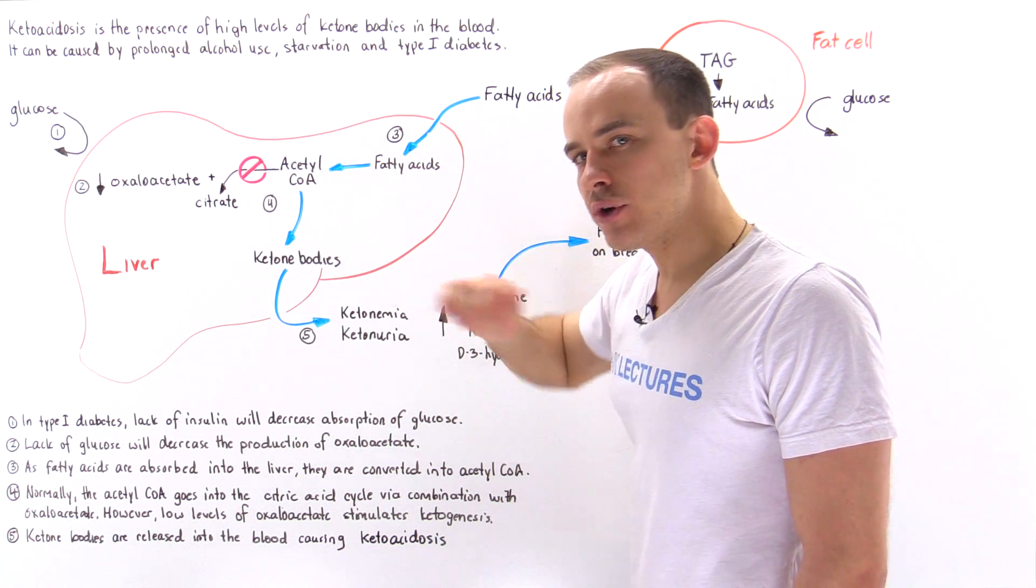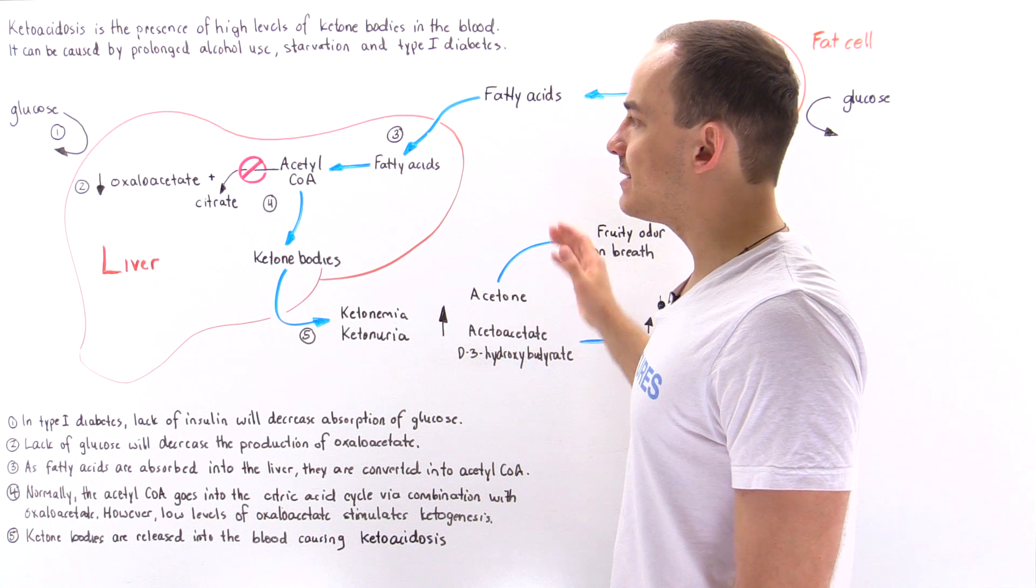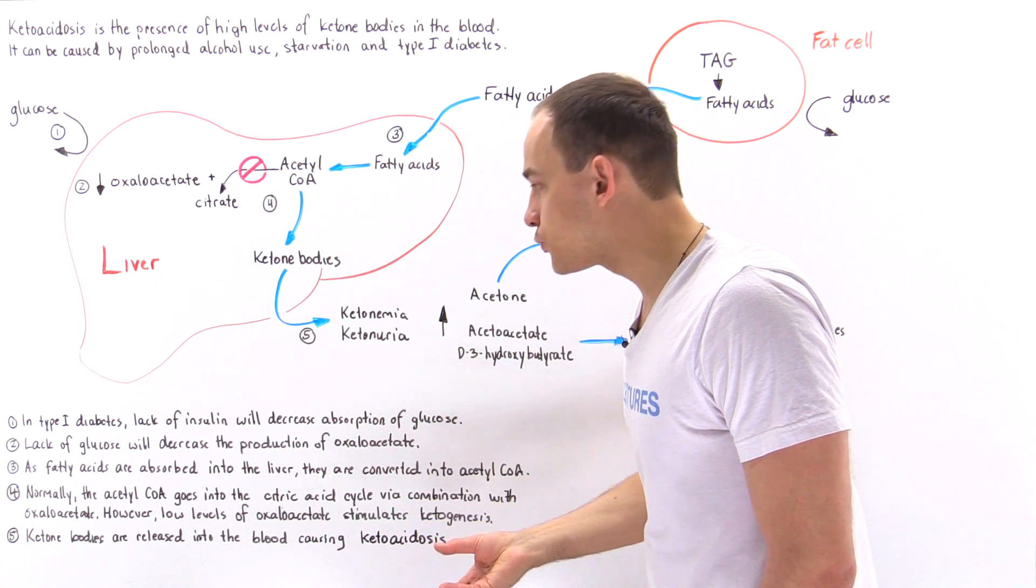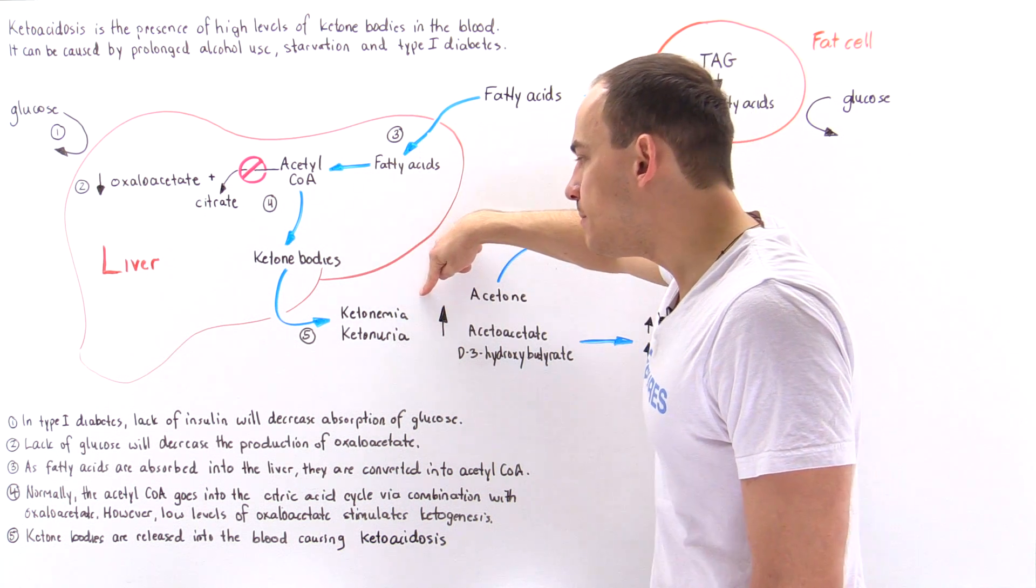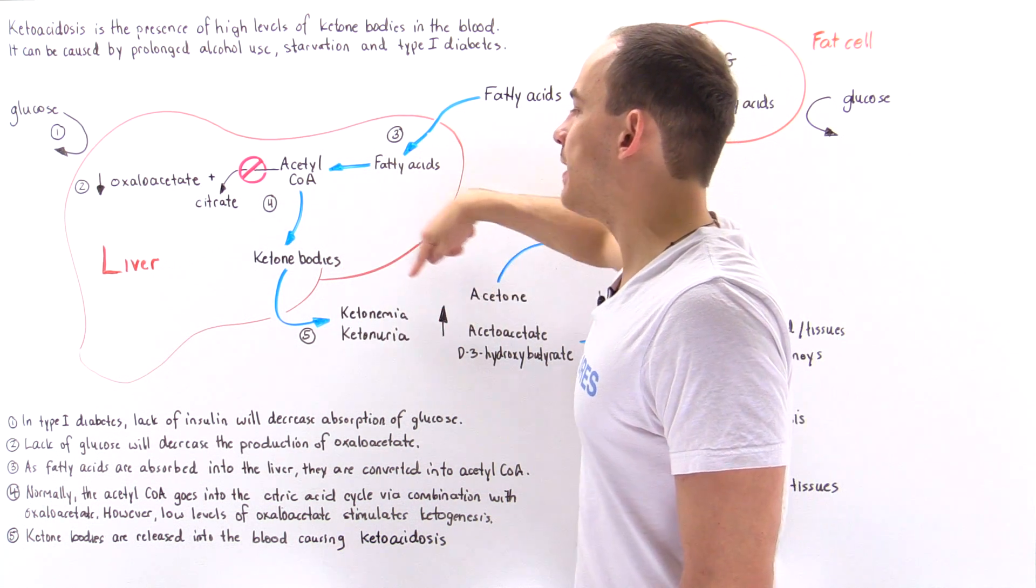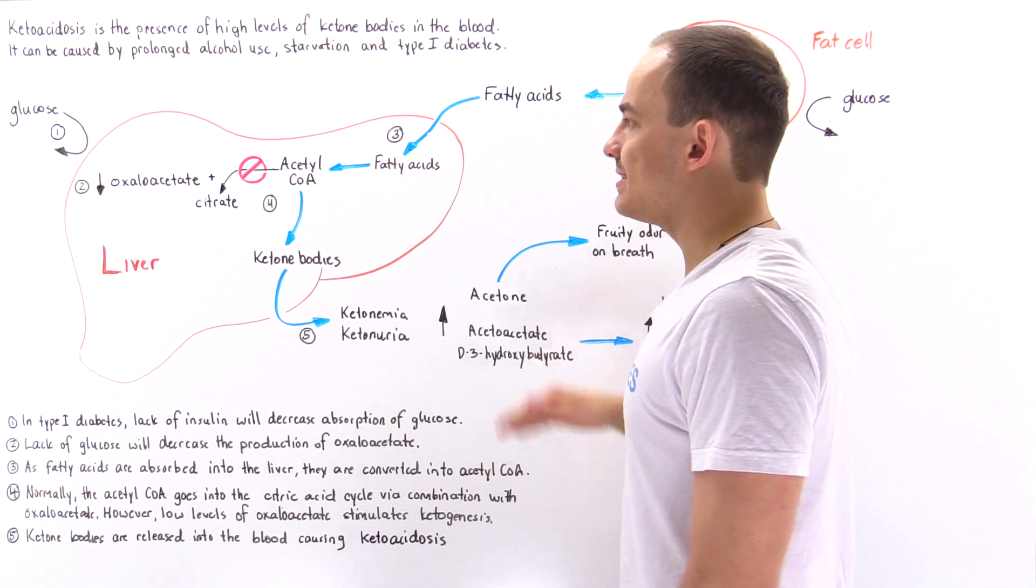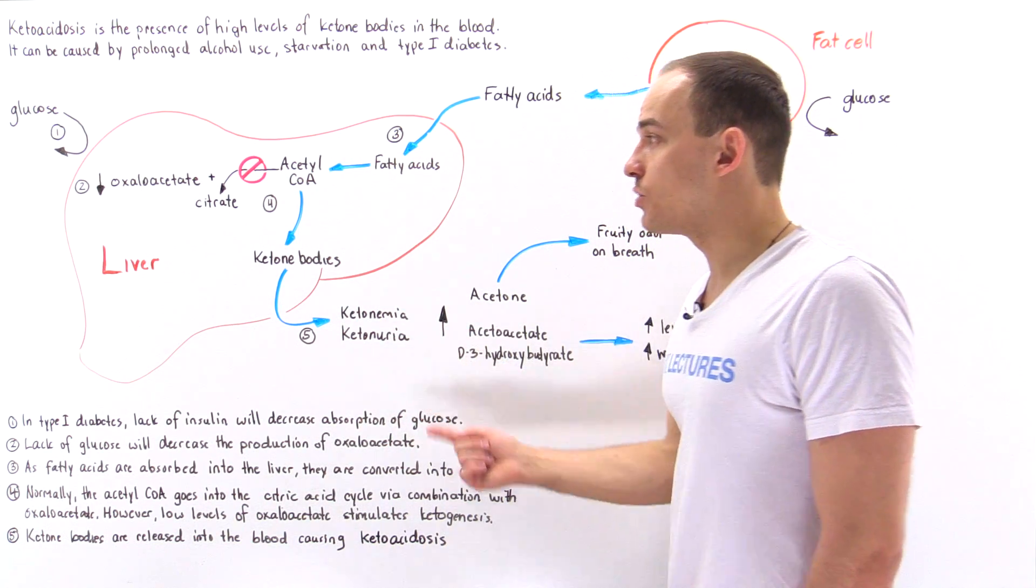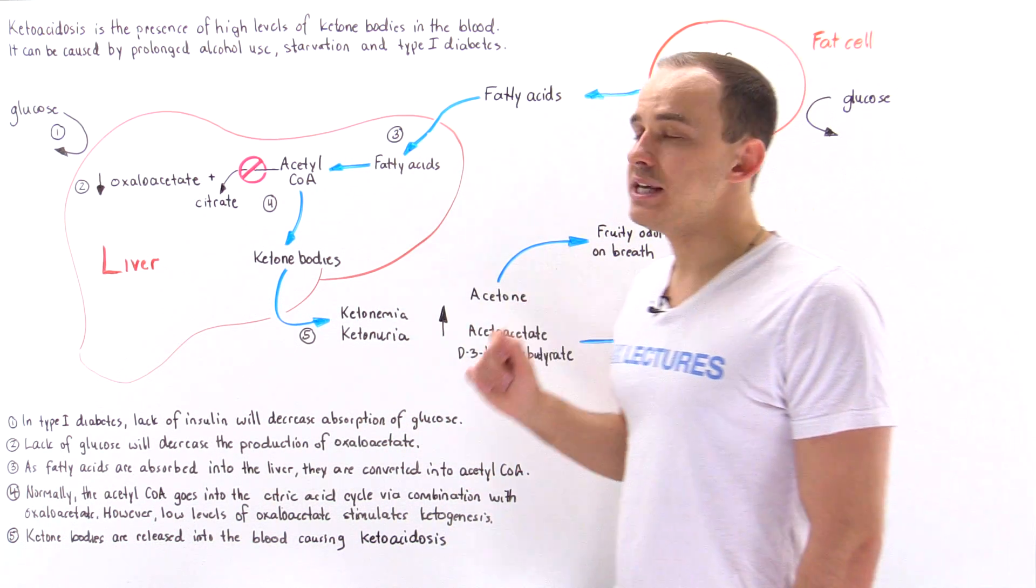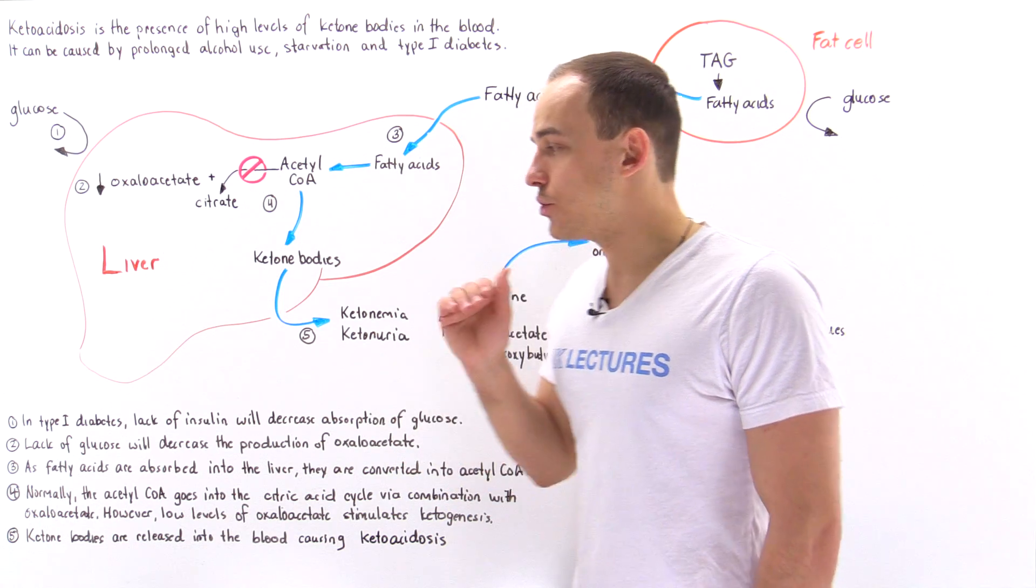We're going to increase levels of ketone bodies in the liver, and they're going to be dumped into the bloodstream. So we're going to cause something called ketonemia, which is simply elevation of ketone bodies inside our blood, as well as ketonuria. This is the process by which we're going to excrete those ketone bodies via our urine.